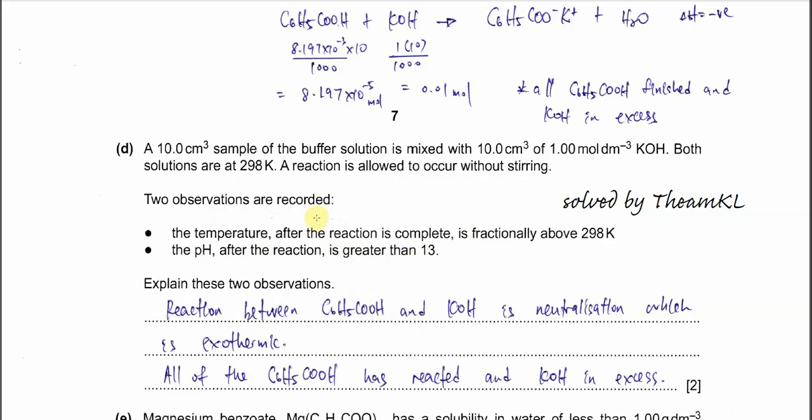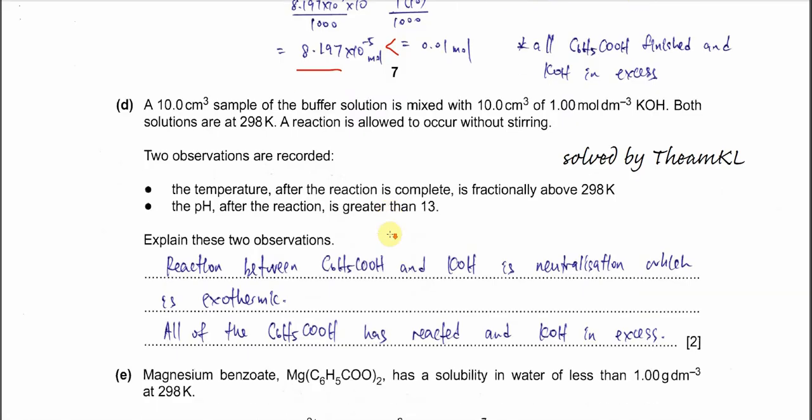First we need to calculate the moles of the acid and the KOH that are used. The moles of benzoic acid can be calculated using MV/1000. In this 10 cm^3, it has 8.197 times 10^-5 moles. KOH is 0.01 mol, which is much larger than the acid. This means the acid will fully react and at the end KOH will be the one in the solution in excess. Therefore, we know that the pH is more than 13 because the KOH is still left in there after reaction.